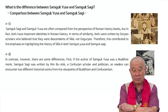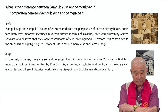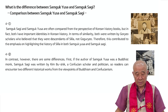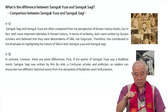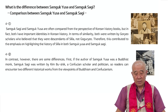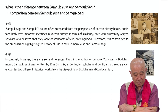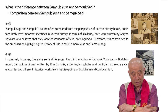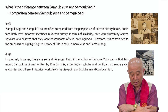Because Samguk YUSA and Samguk Sagi were compiled by scholars of the Korean dynasty, but they are from Silla — that's why they placed a little more importance on Silla than on Goguryo and Baekje. In contrast, there are some differences. The author of Samguk YUSA was a Buddhist monk, while Samguk Sagi was written by Kim Bushik, a Confucian scholar and politician.